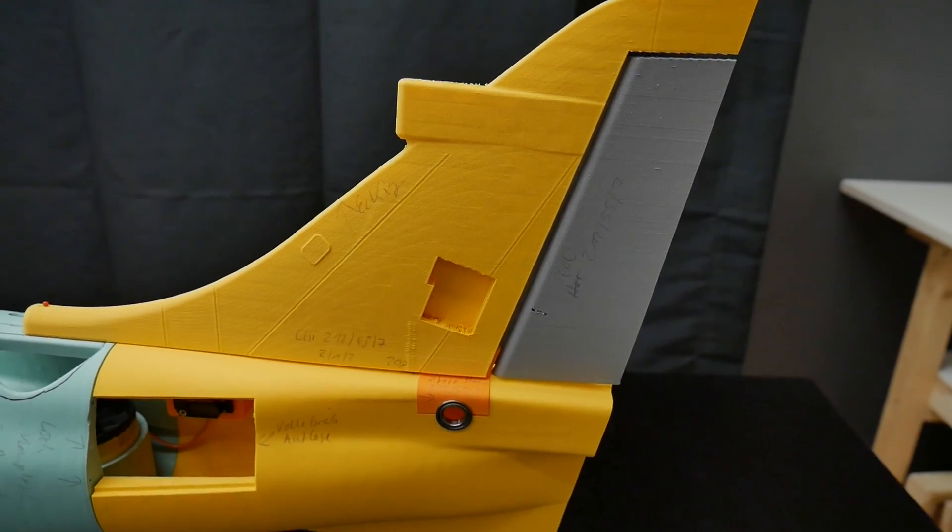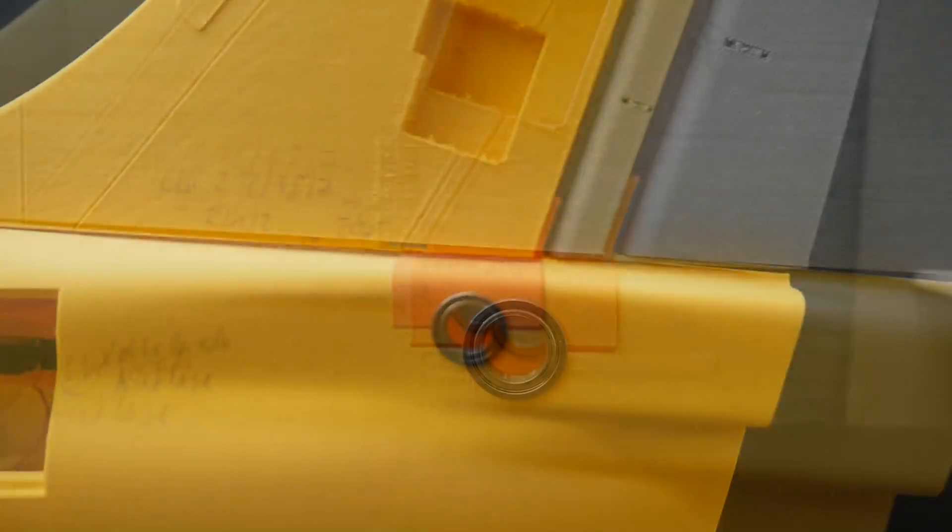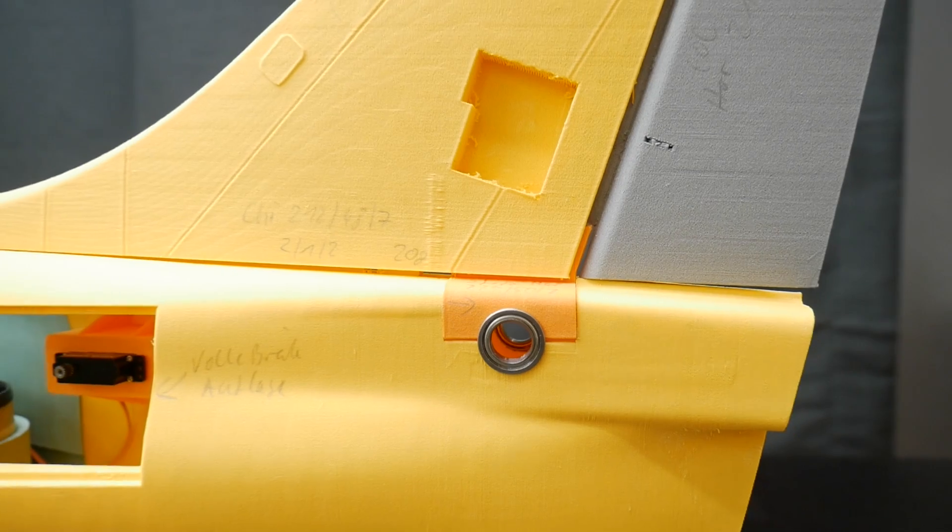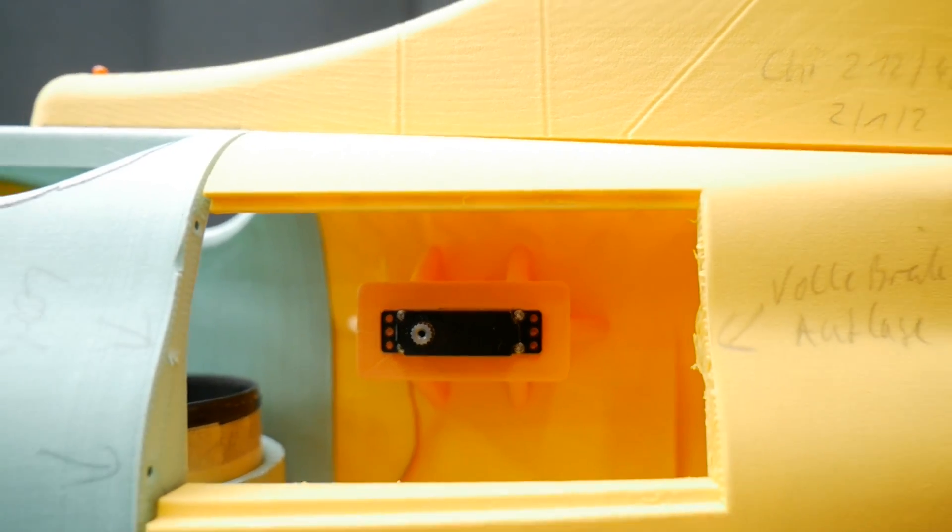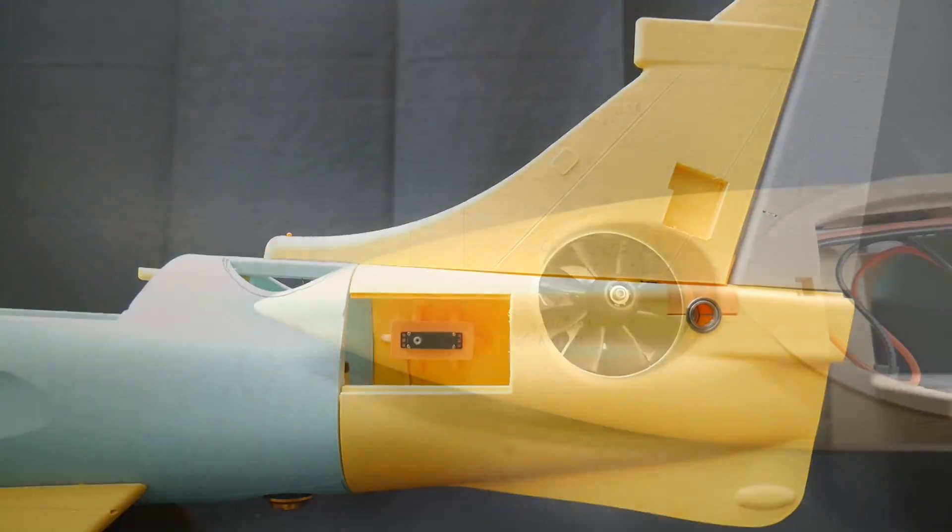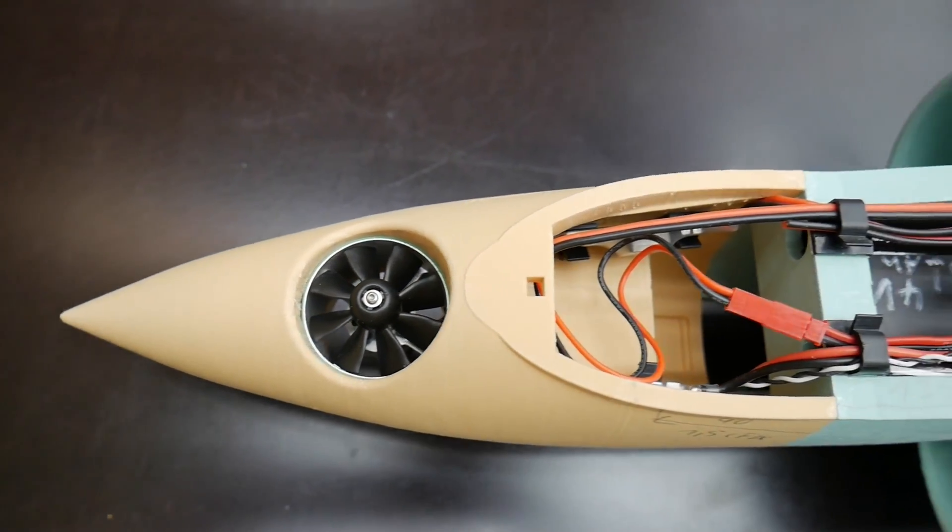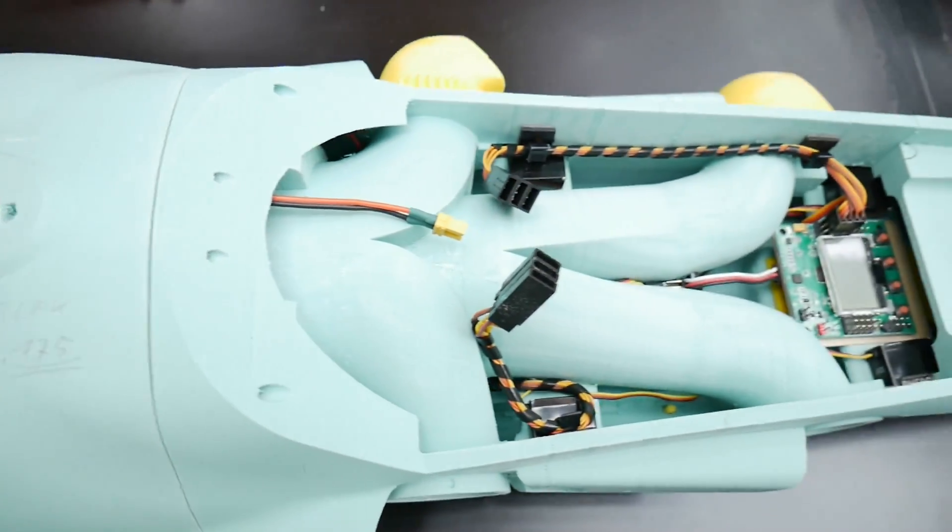This is the new Harrier VTOL fuselage. We added a lot of details. For instance a bigger ball bearing for a 10mm square elevator joiner. We also used super powerful micro servos which will reduce the weight. Here we can see the front EDF, the BEC and also the leveling battery.